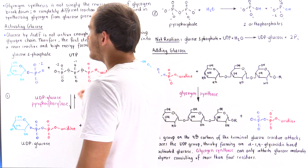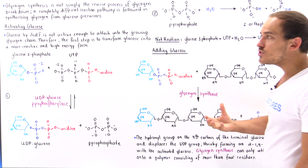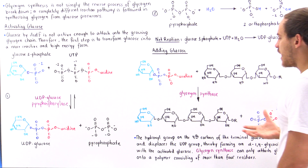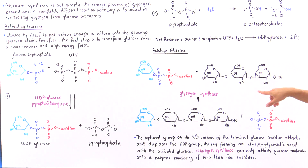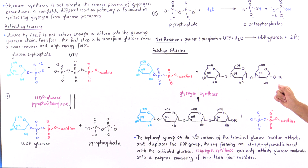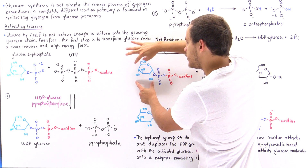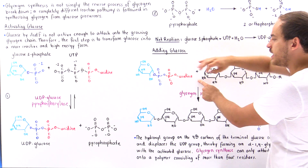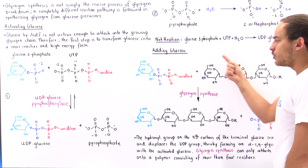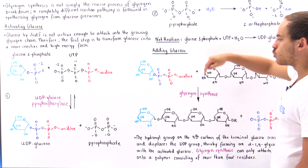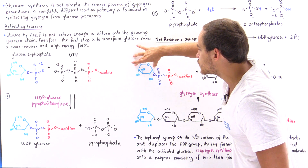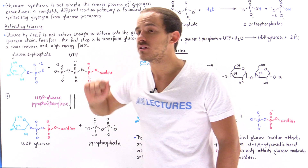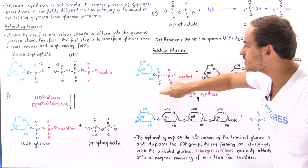Once we form that activated glucose molecule, we're ready to attach it onto the growing glycogen chain. We take the UDP-glucose and, in the presence of an enzyme known as glycogen synthase, the glucose molecule is attached onto the growing glycogen chain. More specifically, the terminal glucose residue containing a free hydroxyl group on the fourth carbon acts as a nucleophile — it attacks carbon 1 of the incoming glucose and establishes an alpha-1,4 glycosidic bond, displacing and kicking off the UDP group.